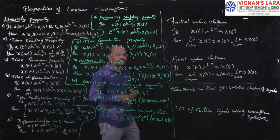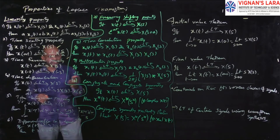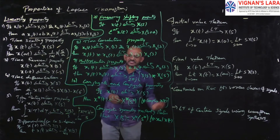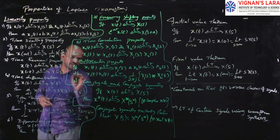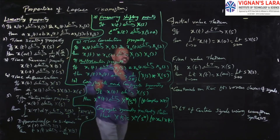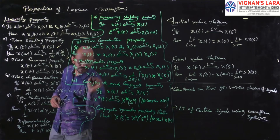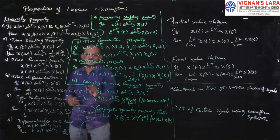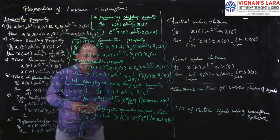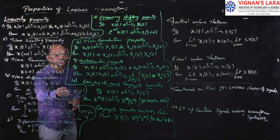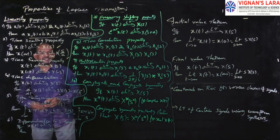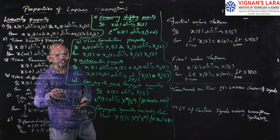Fourth: time differentiation property. If x(t) has Laplace transform X(s), then differentiation in time — d/dt of x(t) — will have Laplace transform s·X(s) − x(0⁻). So, differentiation of x(t) corresponds to multiplying by s in the s domain. This is time differentiation.